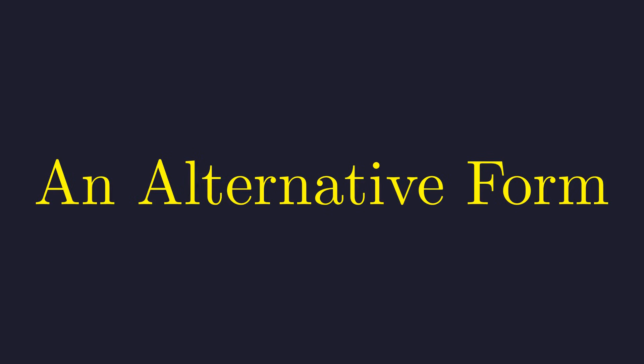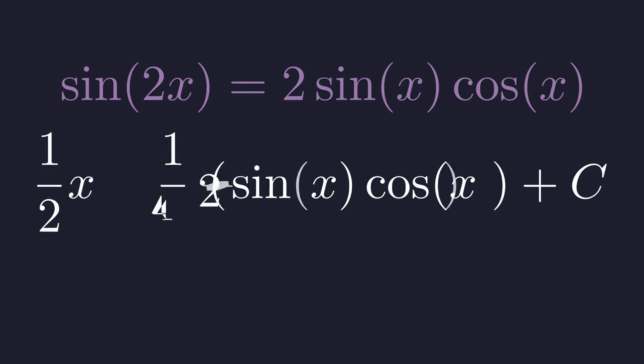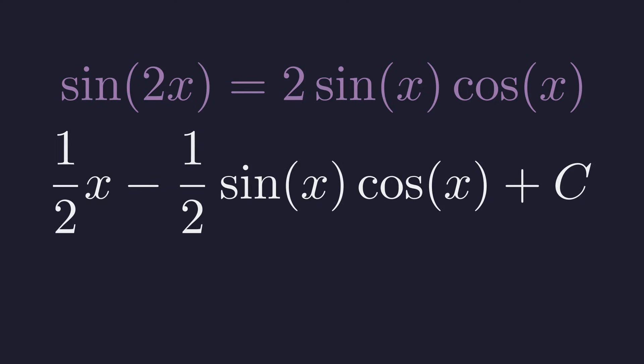This answer can also be expressed in another common form using a different trigonometric identity. Recall the double angle identity for sine. Sine of 2x equals 2 times sine of x times cosine of x. We can substitute this into our solution. Simplifying gives an alternative equally valid form.